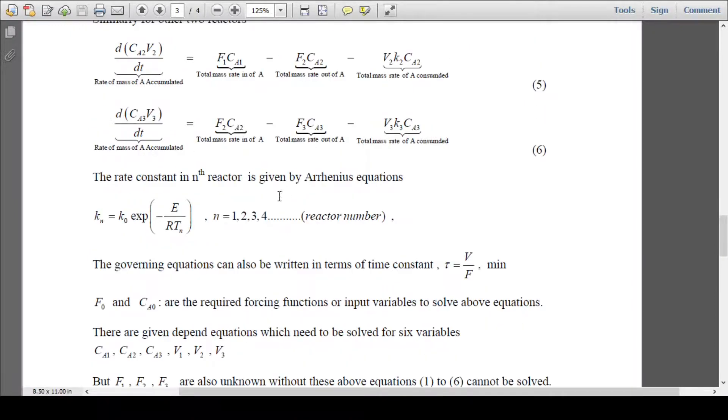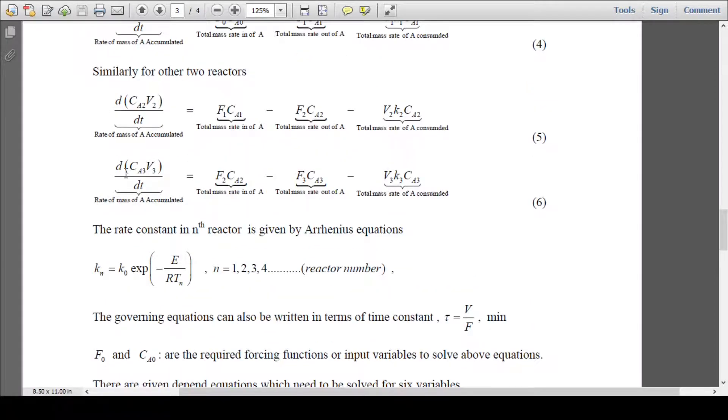For the third reactor, d(Ca3·V3)/dt equals F2·Ca2 (rate of A coming in) minus F3·Ca3 going out minus V3·K3·Ca3 (rate of A consumed).